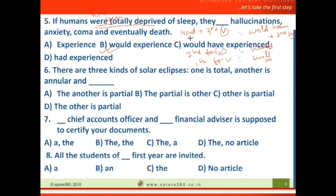Next question: 'There are three kinds of solar eclipse: one is total, another is annular, and the another is partial.' The error is 'the another' — it should be 'the other.' When you say 'the other,' it specifically refers to the rest. 'One is total, another is annular, and the other is partial' means the remaining one is partial. So the correct option uses 'the other is partial.'